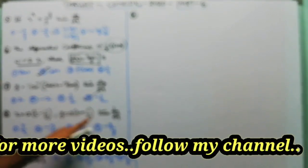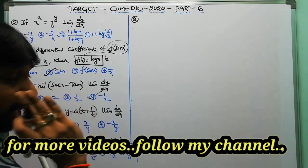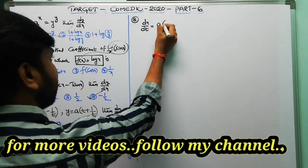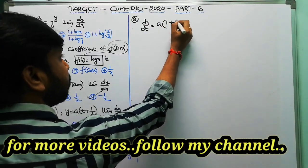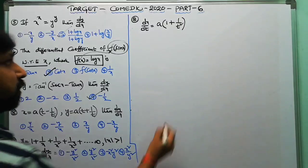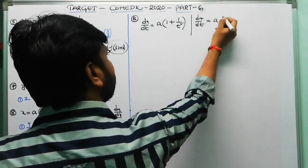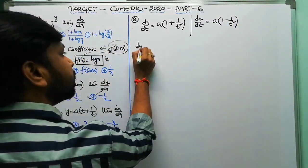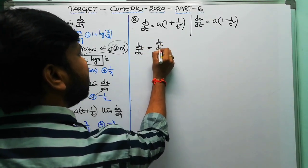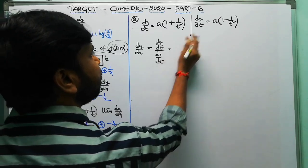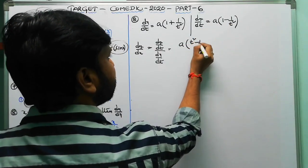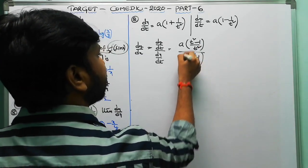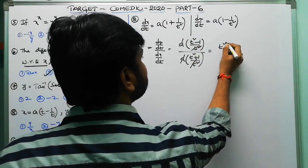Question 8: x equals a(t − 1/t), y equals a(t + 1/t). These are parametric functions, so apply separate derivatives. dx/dt equals a(1 + 1/t²). dy/dt equals a(1 − 1/t²). To find dy/dx, compute dy/dt divided by dx/dt, giving a(t² − 1)/t² over a(t² + 1)/t², so a cancels and t² cancels, giving (t² − 1)/(t² + 1).